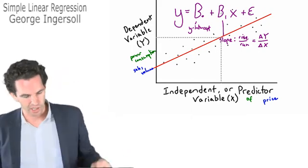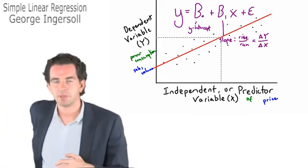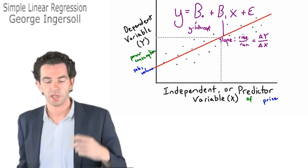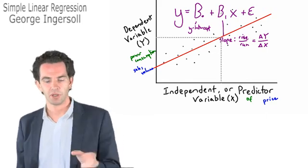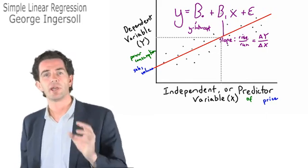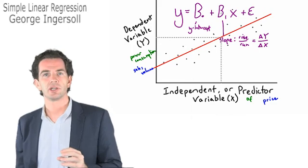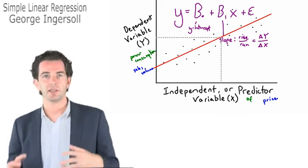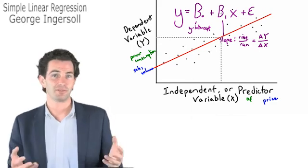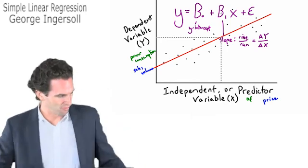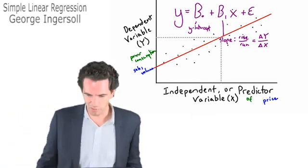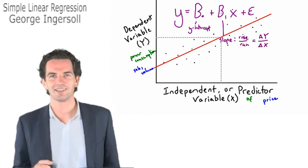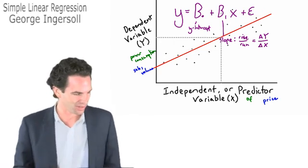That's why you might sometimes hear regression called sum of squares — because you're putting a line in place, the equation for which minimizes the sum of squared differences between predicted and observed values. Enough with the why of it — you understand what we're trying to do here: we're fitting a line to the data. That's the long and short of it.